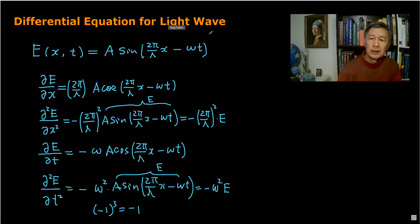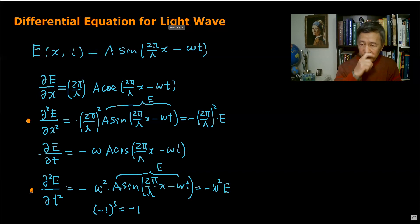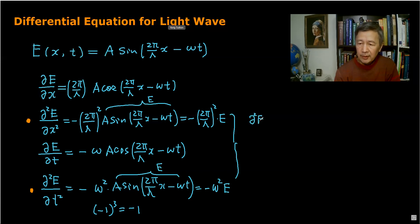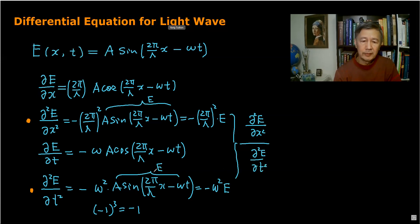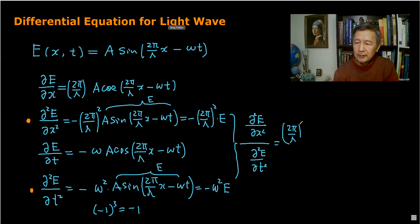So we have two key equations: the second partial derivative with respect to x equals −(2π/λ)²·E, and the second partial derivative with respect to t equals −ω²·E. If we divide these two equations, E cancels, and we are left with (2π/λ)² divided by ω².